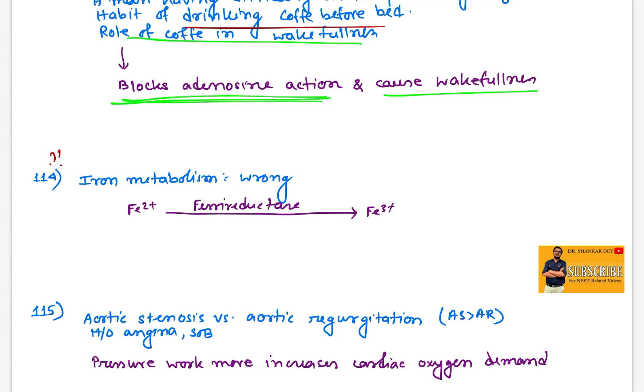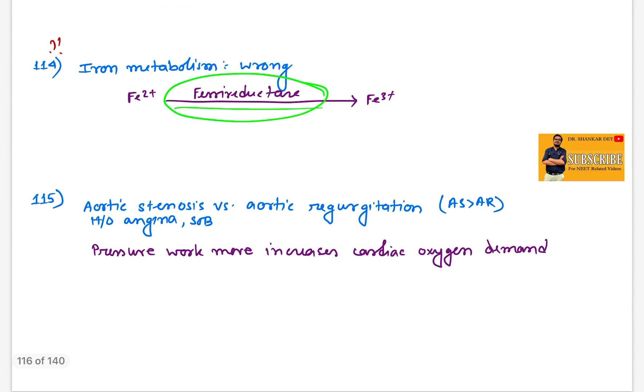I am confused with this question whether it was there or not. Some of you are telling it was there related to wrong statement. Question 114: Ferric reductase reduces Fe2+ to Fe3+. I think this type of question was there, kindly let me know in the comment section.